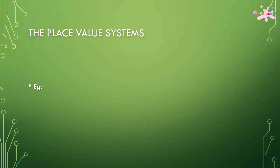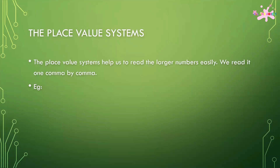The place value systems. The place value systems help us to read larger numbers easily. We read it comma by comma, like 1,00,23,456.